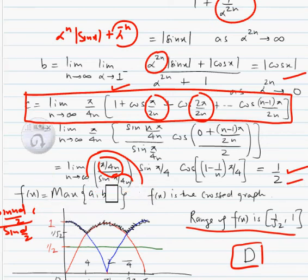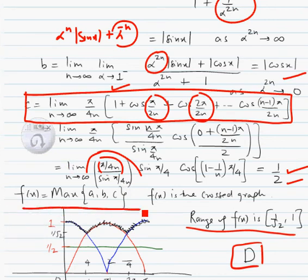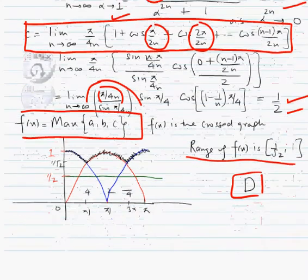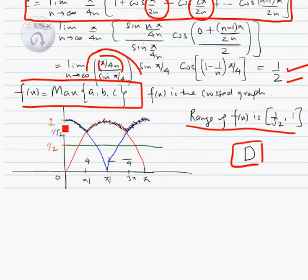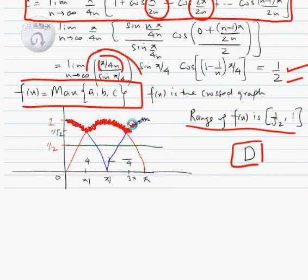Now we have ABC in simplified form. We need to examine function f(x), which is the maximum of a, b, and c. We draw the graph of a — that is mod sin x — the graph of b — that is mod cos x — and the graph of c — that is the constant 1/2 — and take the maximum of the three. Moving from left to right, we choose the highest point among the three graphs. This gives the graph of f(x), and the range of f(x) is from 1 by root 2 to 1.